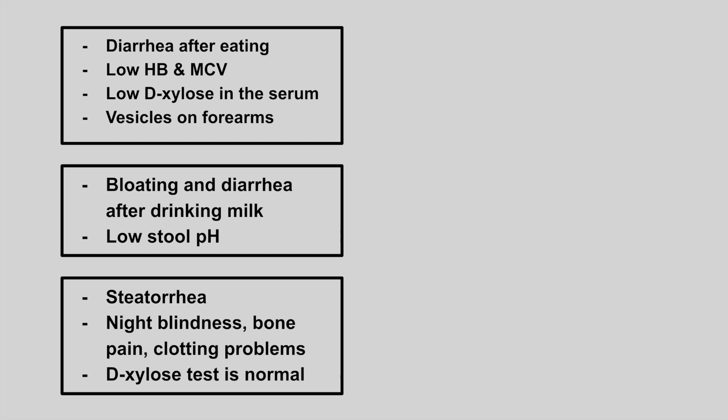The first patient has diarrhea after eating, a low hemoglobin and low MCV, low D-xylose in the serum, and vesicles on the forearms. This is celiac disease — a gluten intolerance. On histology, you'll see villus atrophy and crypt hyperplasia. Due to malabsorption, you get vitamin and nutrient deficiencies, and it's also associated with dermatitis herpetiformis, hence the vesicles on the forearms.